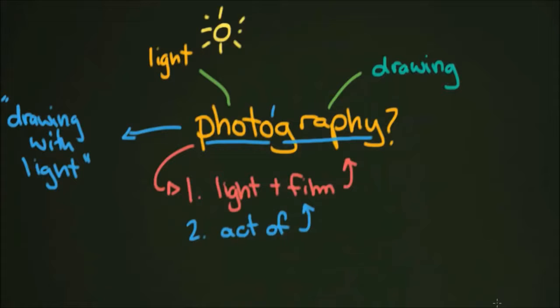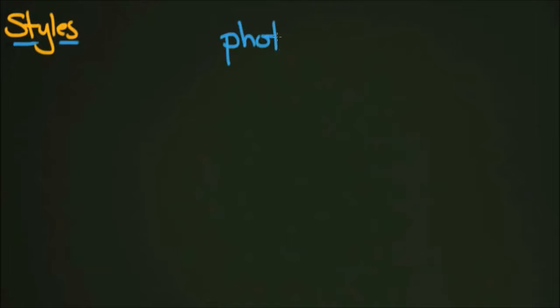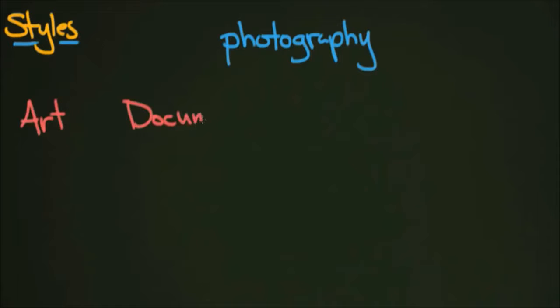So that's your definition of photography. Now let's look at who are photographers and what are the different styles of photography. Styles have a lot to do with approach — not necessarily the look of the photo, but the actual way the photograph is being made. We've got art photography, documentary photography, commercial photography, and I'm going to put one more group called the X group, which I'll talk about in a minute.